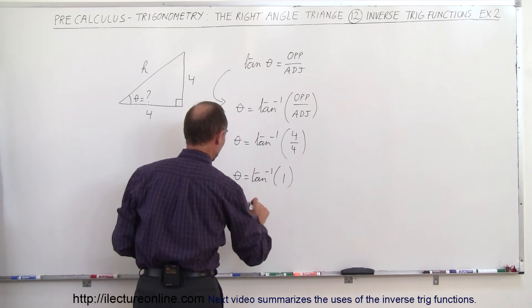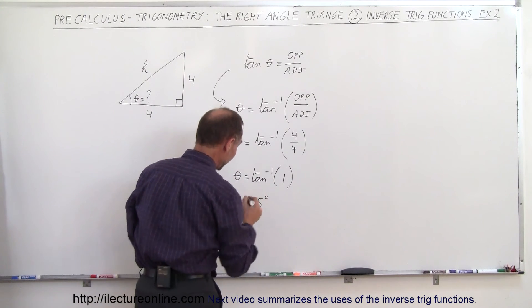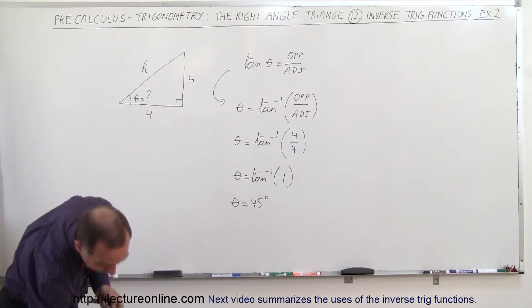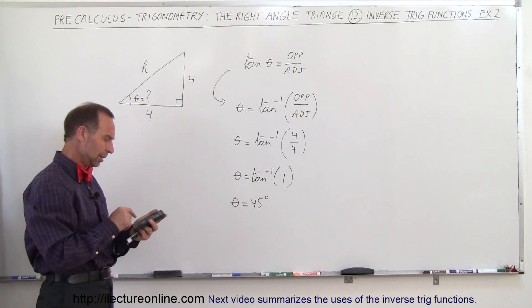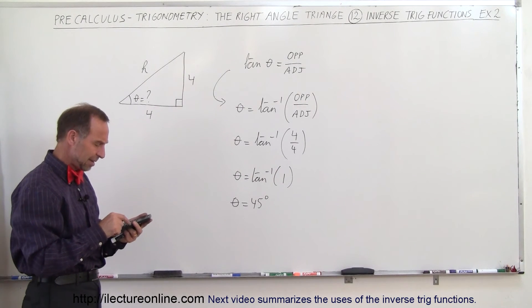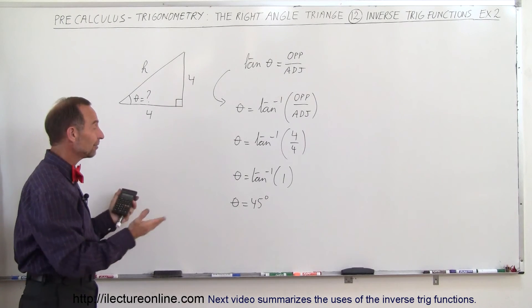Now, if you don't remember that, you simply grab your calculator, plug in 1, or 4 divided by 4, take the inverse of the tangent, and there it is, 45 degrees.